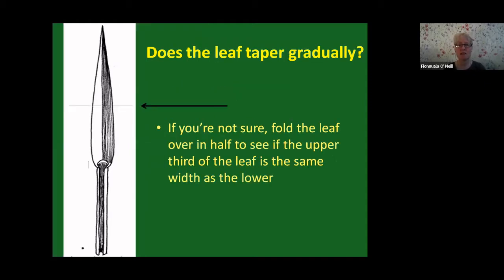Sometimes a key will ask whether the leaf tapers gradually or is parallel-sided. Usually you can tell by looking, but if you're unsure, fold the leaf over in half to see if the upper third is the same width as the lower third. This tells you whether the leaf tapers gradually or stays parallel most of the way before narrowing suddenly to the tip.